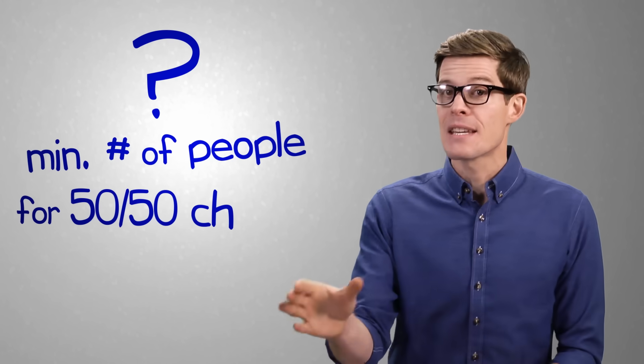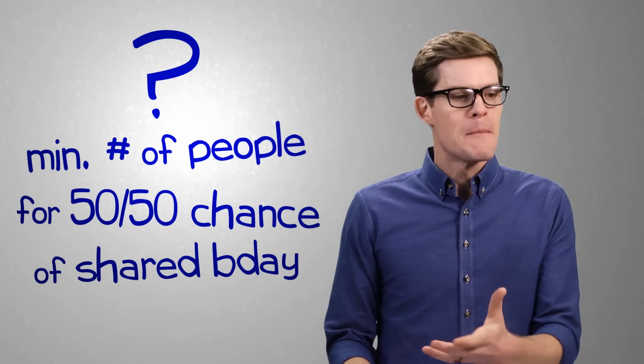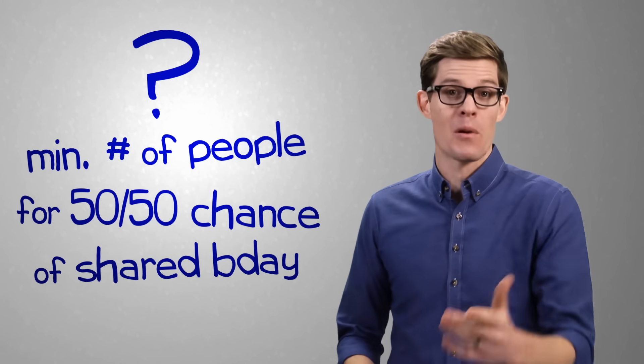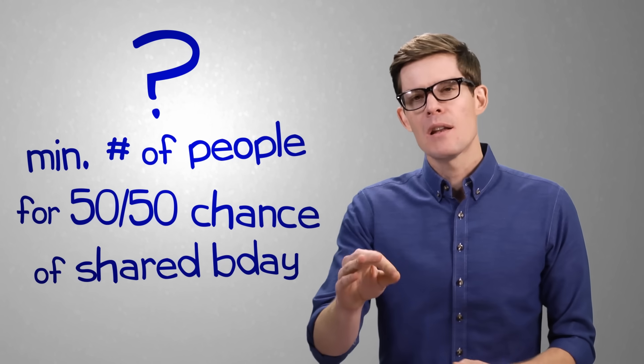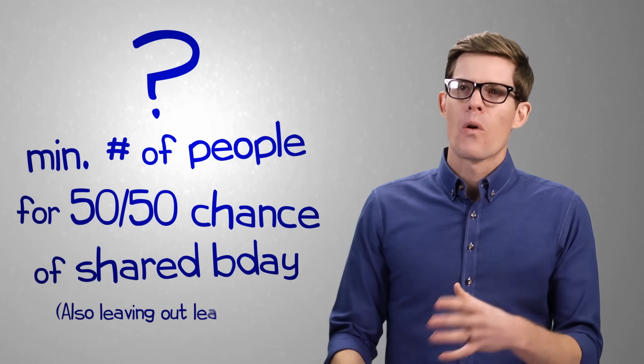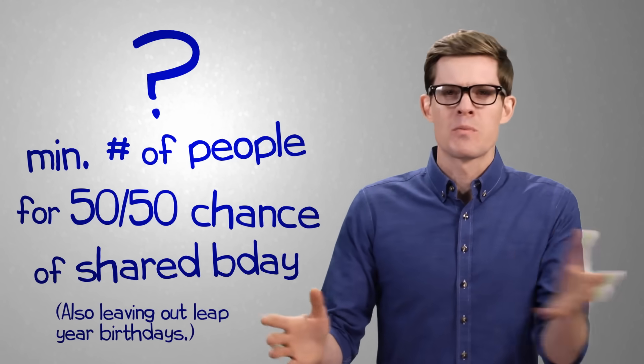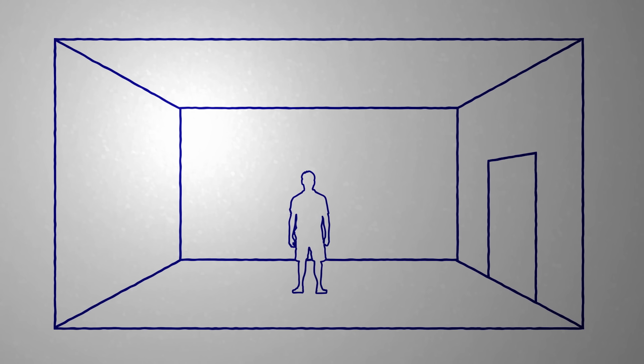First, let's simplify the problem a bit. Let's figure out how many people you'd have to get together in a room to do just better than a 50-50 chance of a birthday match. Assuming none of them are twins, or triplets, or that you're not at a convention for people whose birthday's on April 7th or something.